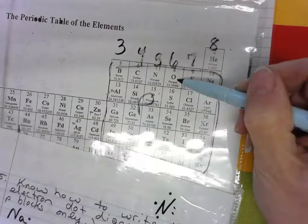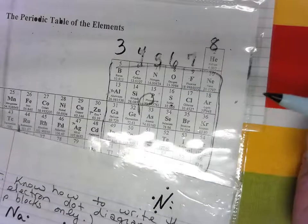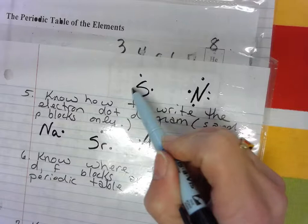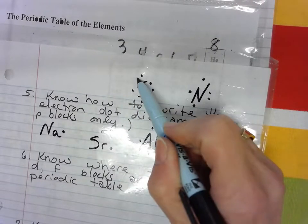The oxygen family, let's just write sulfur, has six valence electrons. One, two, three, four, five, six.